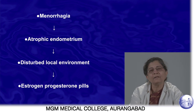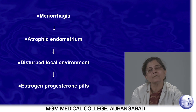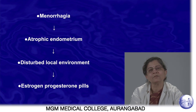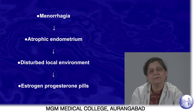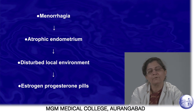Menstrual bleeding finally stops due to regeneration, which requires a normal and active basal endometrium with estrogen stimulation. If this is absent, atrophic endometrium results — it cannot control bleeding well and bleeding continues for a prolonged period. In this condition, progesterone alone is not helpful; we must give combined OCP (estrogen and progesterone), or give estrogen alone for the first cycle, add progesterone for the first half, and continue both in the second half.